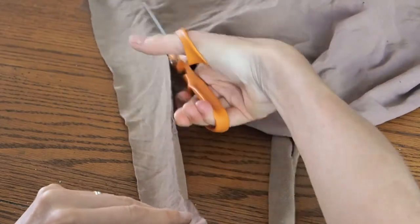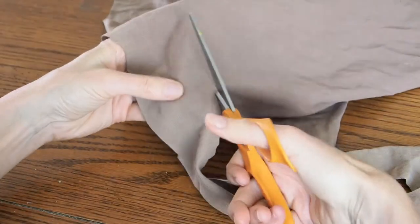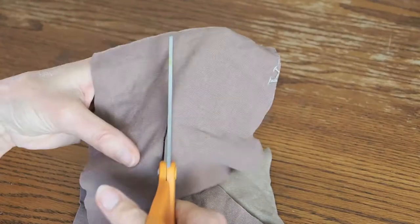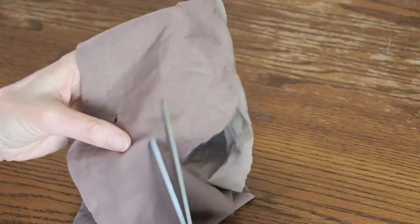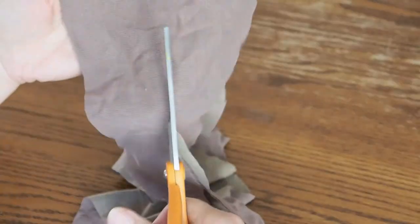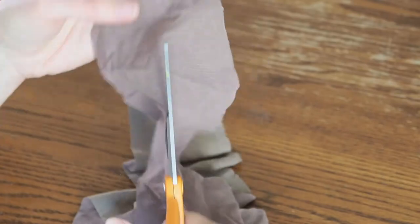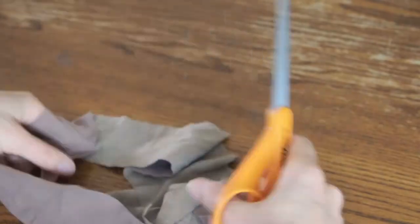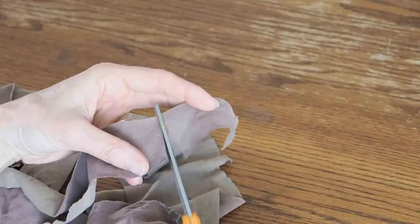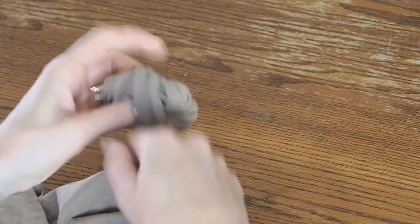And we just keep cutting around and around in a continuous cut, all the way up to the top and end of our t-shirt. And then when we get to the end, we're just going to have a little strip there. And we will cut that off. And we stretch out our yarn as we go. Pull it tight and roll it up into our ball of t-shirt yarn.